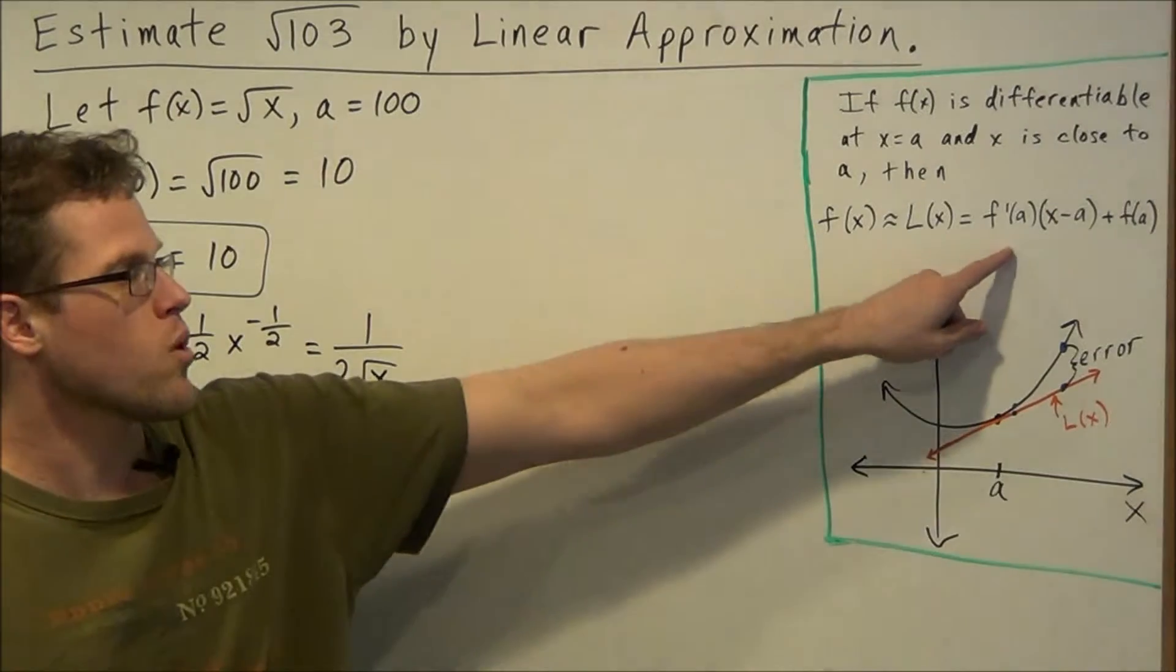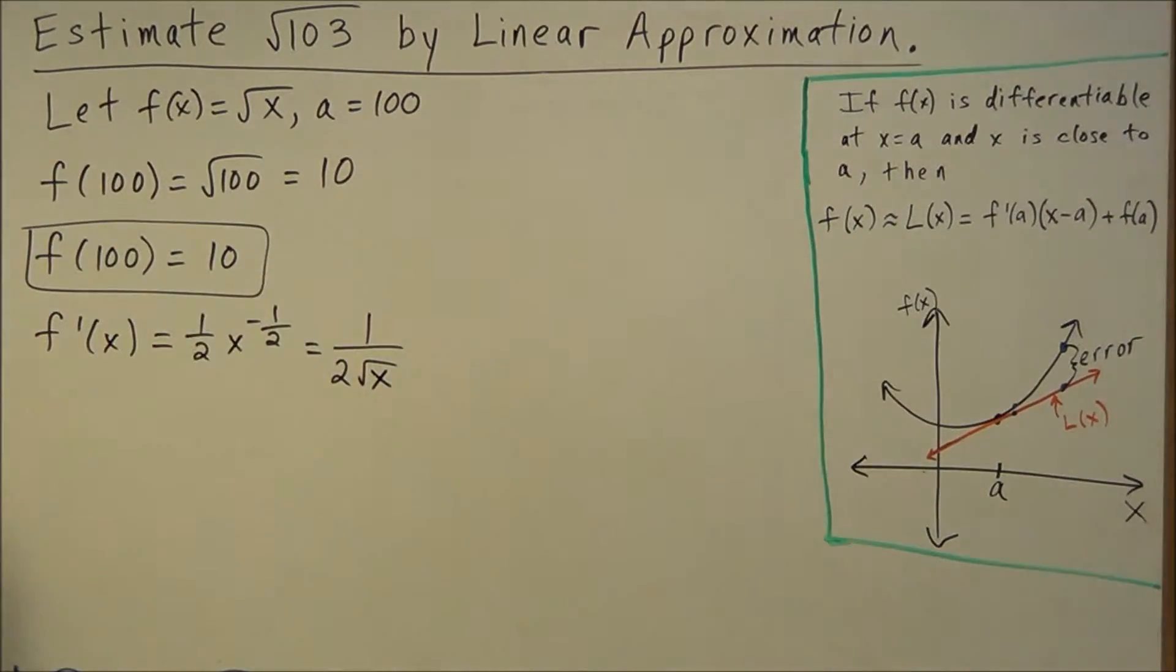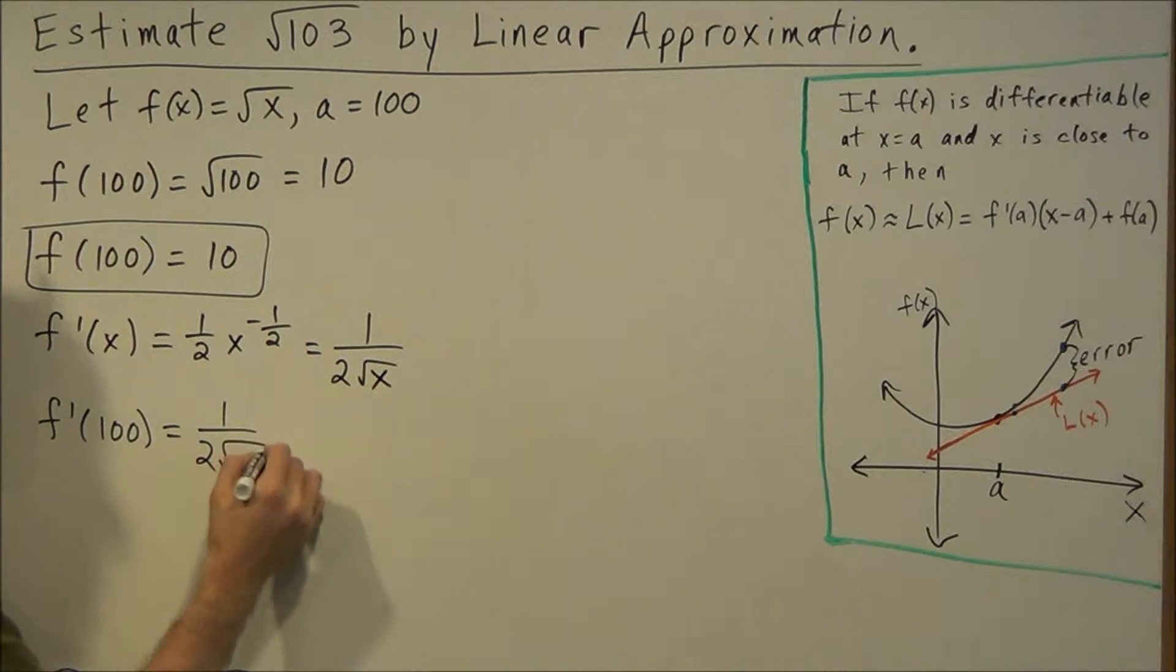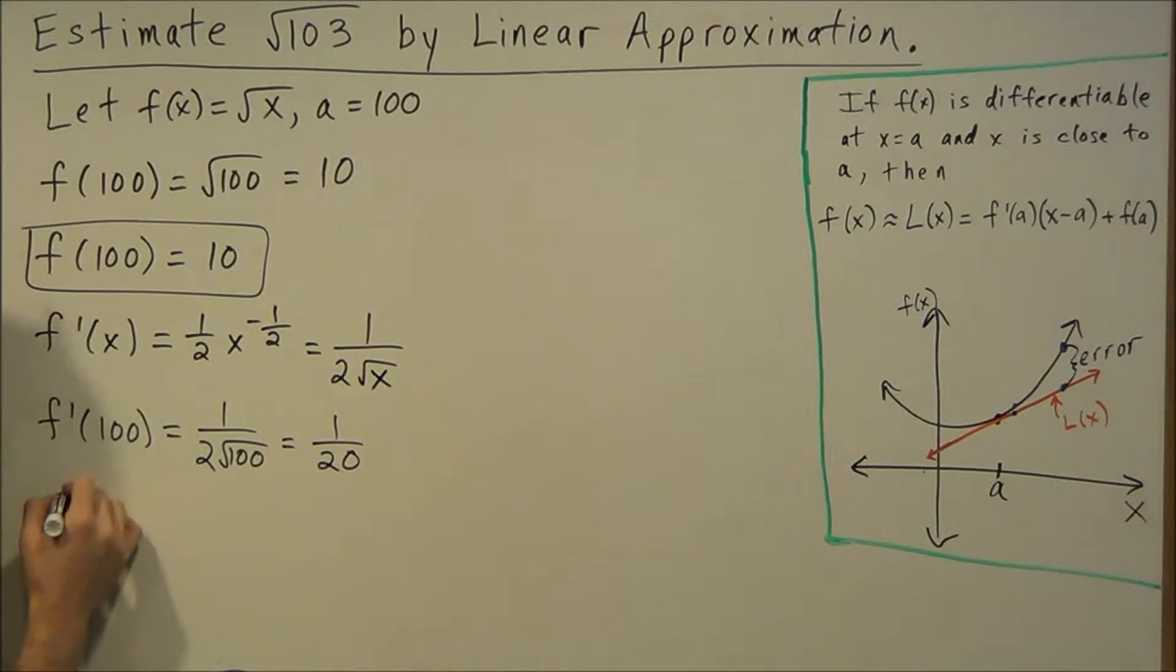So the next thing we want to find is what is f prime of 100. Remember our a value here is 100, so we're going to plug that into our derivative. So this is 1 over 2 times the square root of 100, which is 2 times 10. So our slope is 1 over 20.